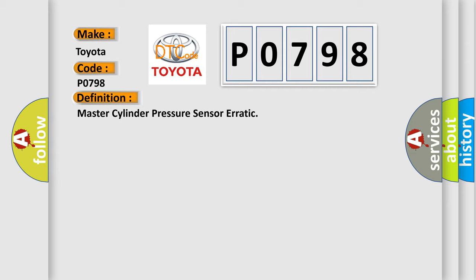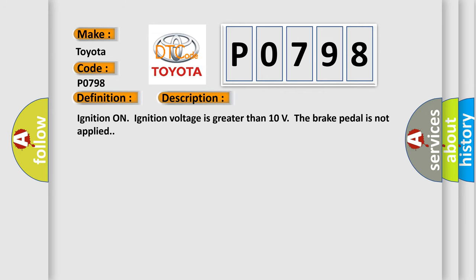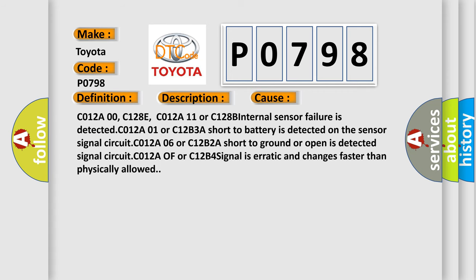And now a short description of this DTC code. Ignition on — ignition voltage is greater than 10 volts. The brake pedal is not applied. This diagnostic error occurs most often in these cases: C012A00 or C128E — internal sensor failure detected; C012A11 or C128B — internal sensor failure detected; C012A01 or C12B3A — short to battery detected on the sensor signal circuit; C012A01 or C12B2A — short to ground or open detected on the signal circuit; C012A or C12B4 — signal is erratic and changes faster than physically allowed. The airbagreset website aims to provide information in 52 languages.